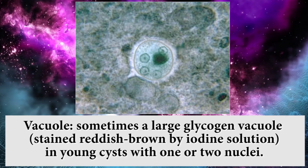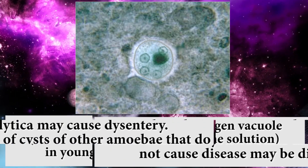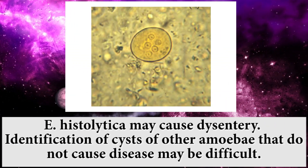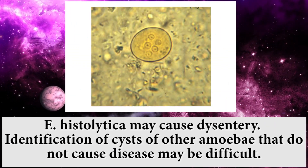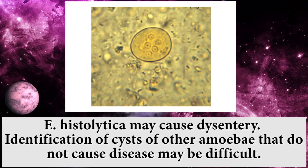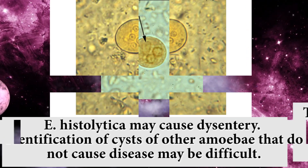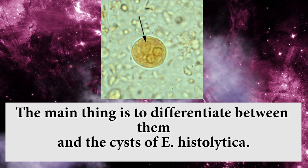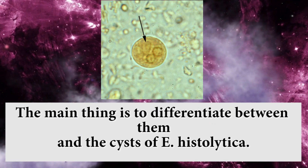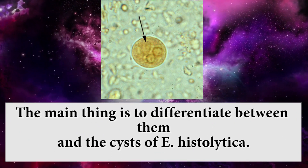In young cysts with 1 to 2 nuclei, Entamoeba histolytica may cause dysentery. Identification of cysts of other amoeba that do not cause disease may be difficult. The main objective is to differentiate between them and the cysts of Entamoeba histolytica.